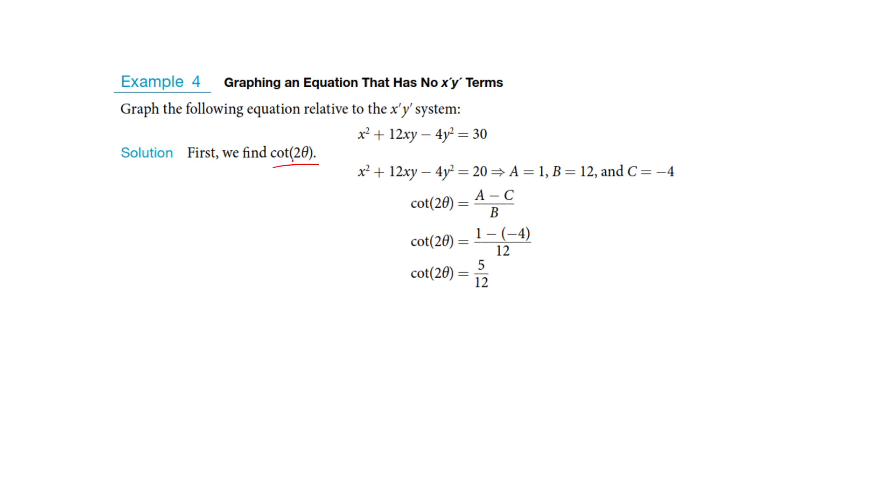So first of all, here's our update. We are basically going to switch out from the regular rectangular system to this rotated system. And so what we started with was we found cotangent of the double angle. Again, I don't have the proof for where this comes from. So we are doing A minus C over B. Well, here's A. That's 1. C is negative 4. B is 12. So put all that in here.